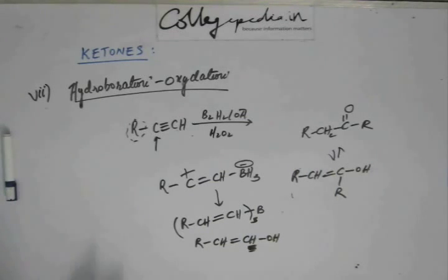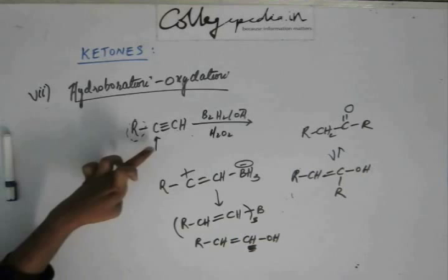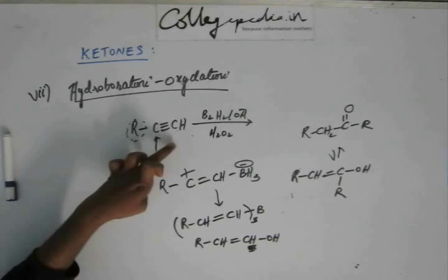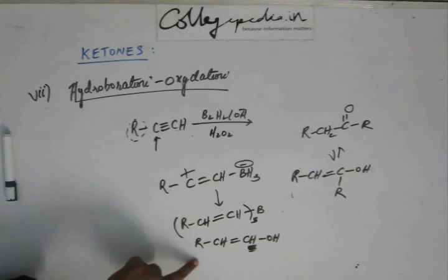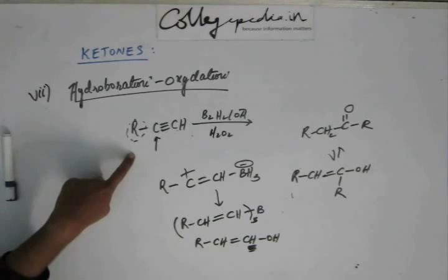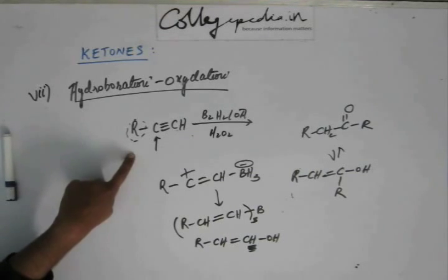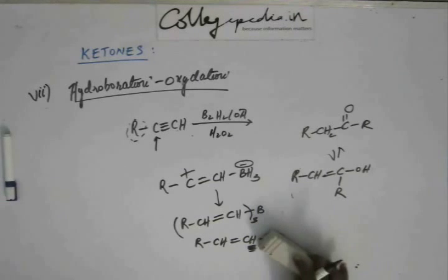The bottom line is: when there is a terminal alkyne, hydroboration oxidation results in an aldehyde. When it is not a terminal alkyne, the result is a ketone. Now let's solve the conversion problems.